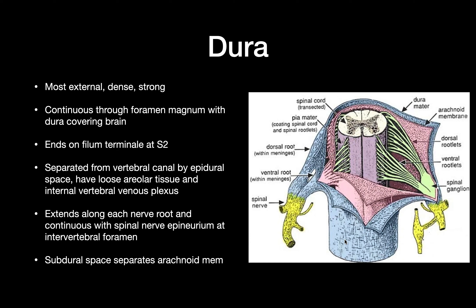The dura is the most external layer — it's dense and strong, and it's continuous through the foramen magnum with the dura covering the brain. It ends on the filum terminale at S2. It's separated from the vertebral canal by the epidural space, which contains loose areolar tissue and the internal vertebral venous plexus. The dura extends along each nerve root and is continuous with the spinal nerve epineurium at the intervertebral foramen. The subdural space separates the dura from the arachnoid membrane.